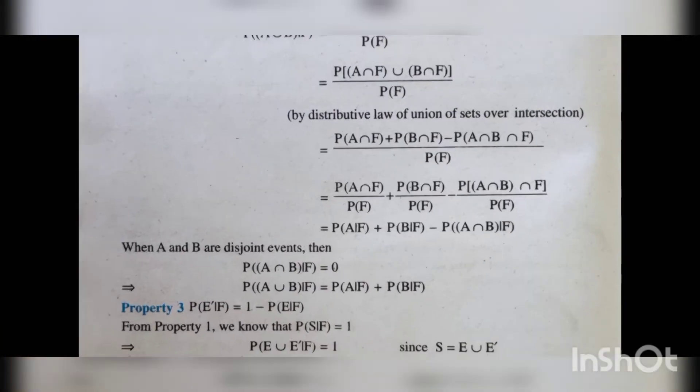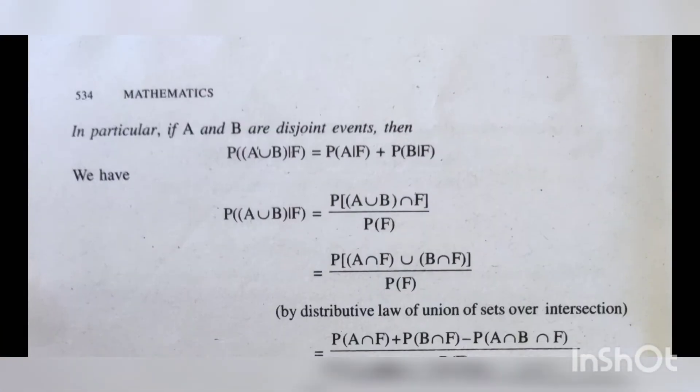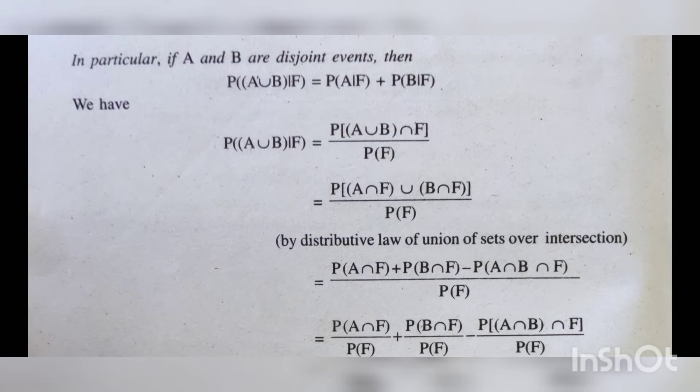Here is the proof. In particular, if A and B are disjoint events, then P of A union B given F equals P of A union B intersection F divided by P of F. By the distributive law of union over intersection, this is written as P of A intersection F union B intersection F, divided by P of F.